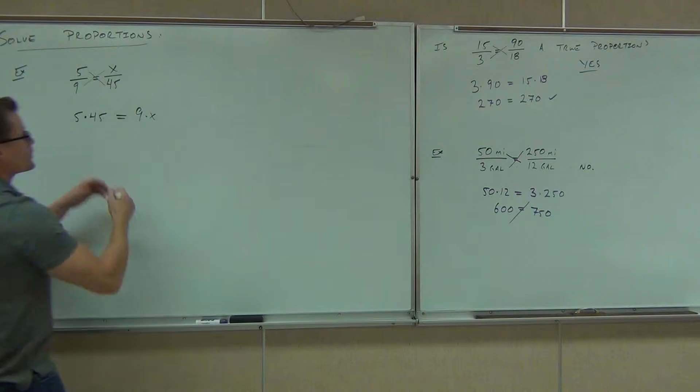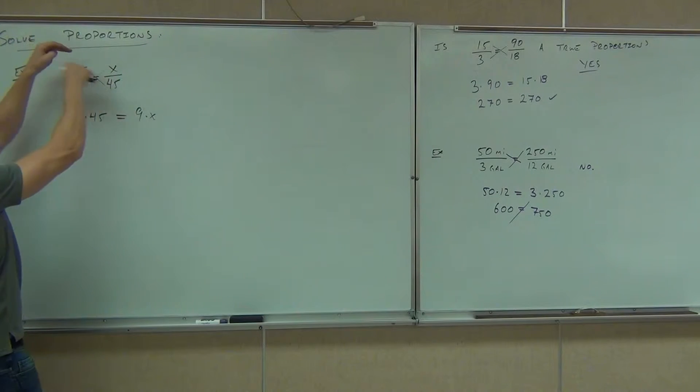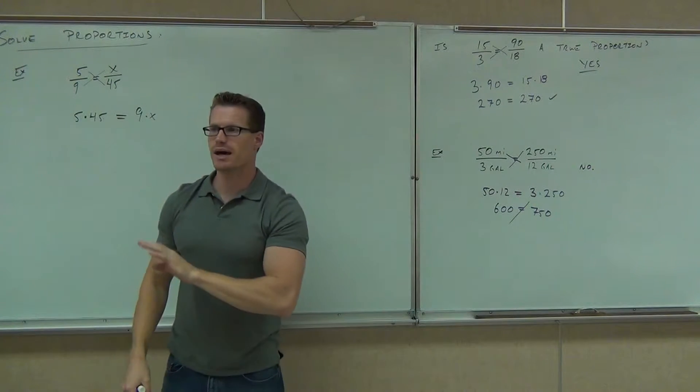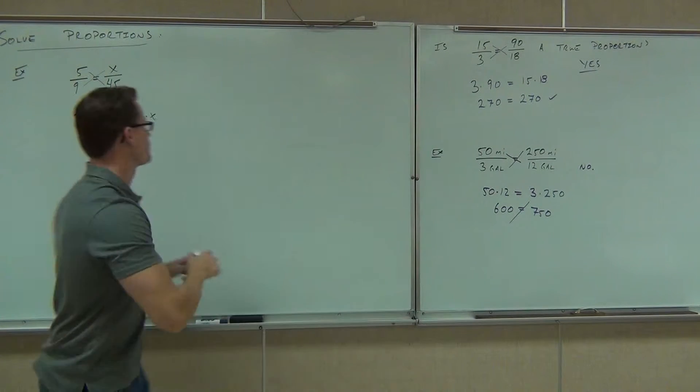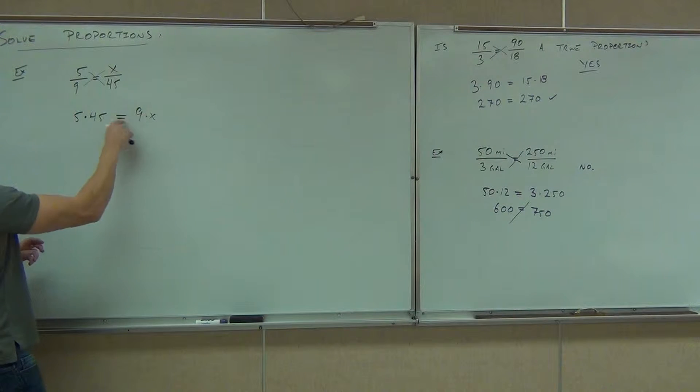Instead, we say, alright, well, we can't cross simplify. That's not happening here. We can't do that. We can cross multiply. So, here we'd have 9x, sure. We'd have 5 times 45. How much is 5 times 45, please?